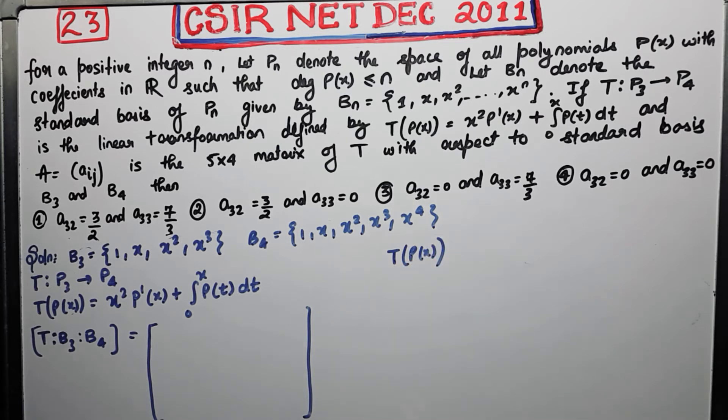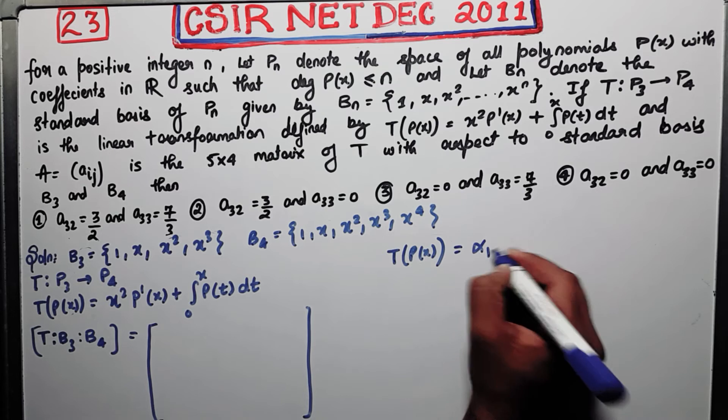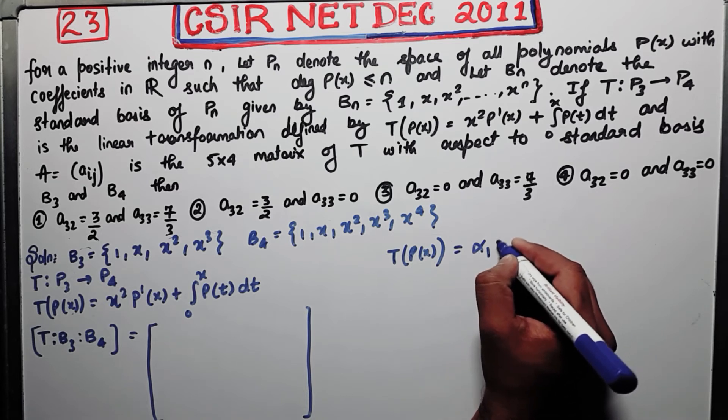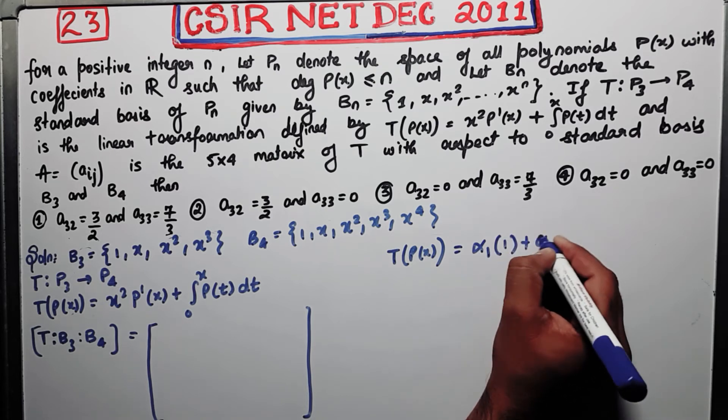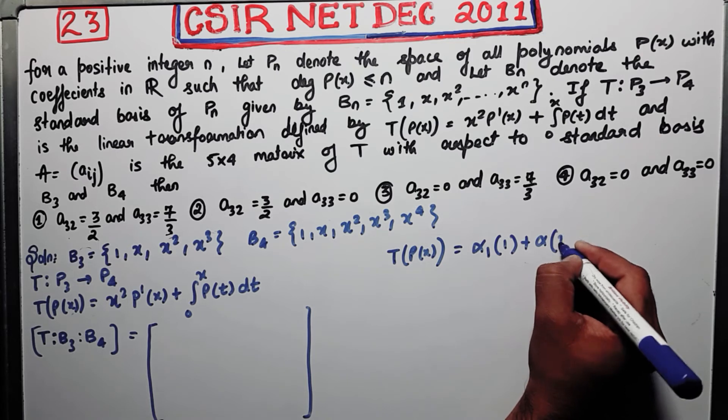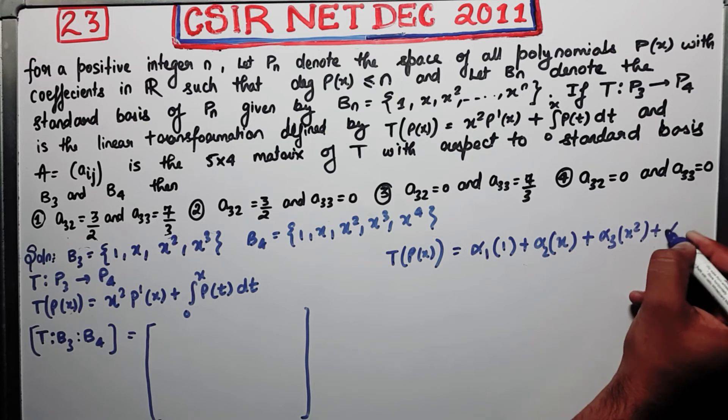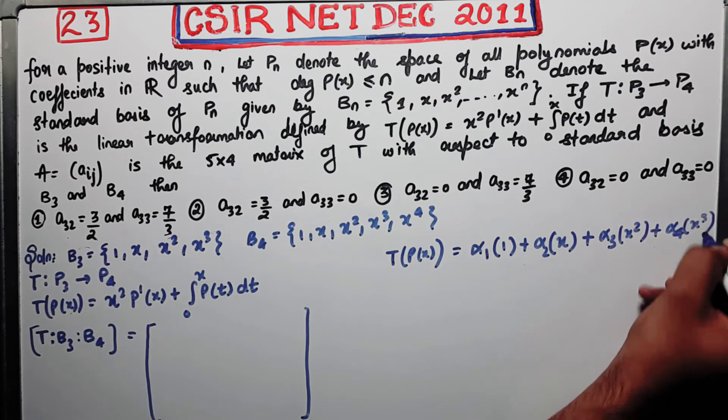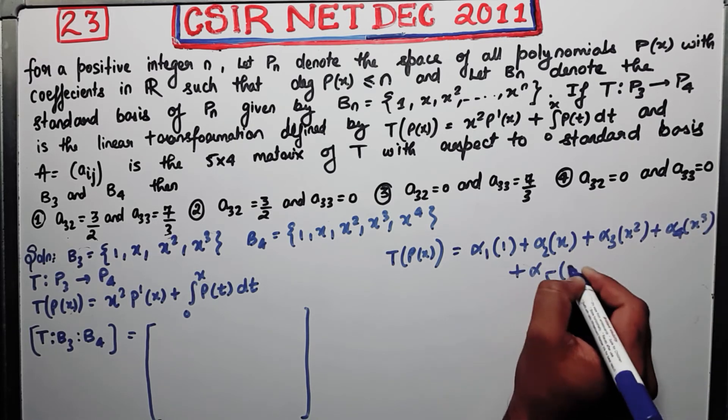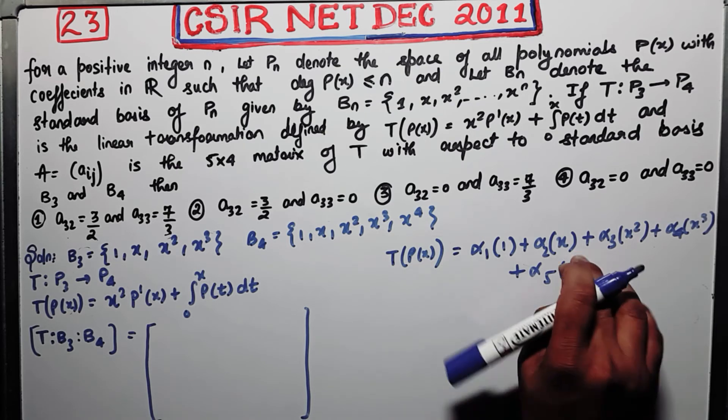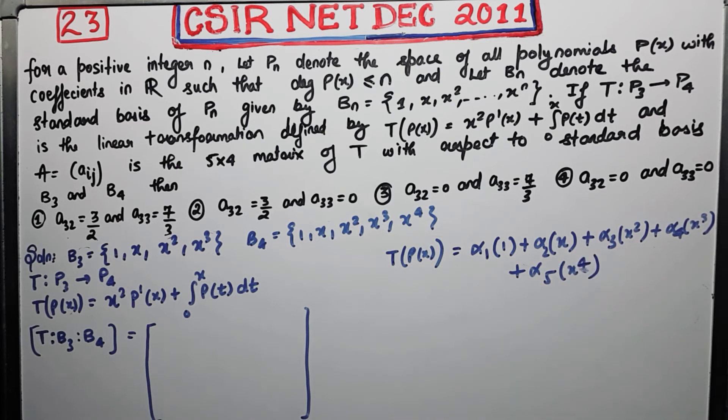So now see, T(p(x)) will lie in P_4. That means T(p(x)) can actually be written as the linear combination of the elements of B_4. Therefore I am writing it as a linear combination of B_4. So what's B_4? α₁ times 1 plus α₂x plus α₃x² plus α₄x³ plus α₅x⁴. So this is your T(p(x)).